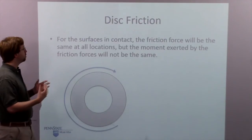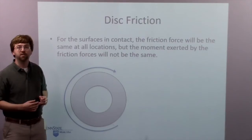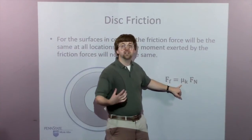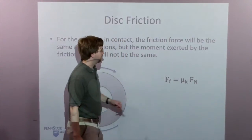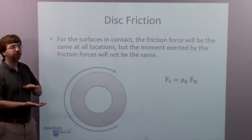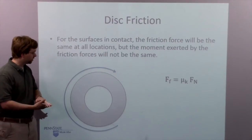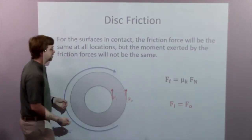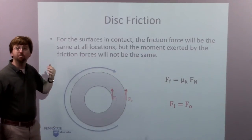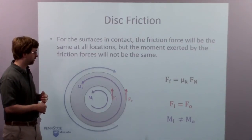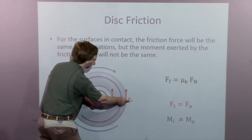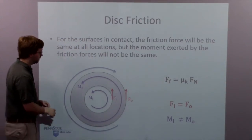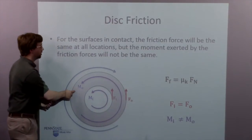For the surfaces in contact, the friction force will be the same at all locations, but the moments exerted by these friction forces are not the same. The friction force at any one location is going to be the kinetic coefficient of friction — assuming uniform materials, that's constant throughout — times the normal force. With two flat surfaces and a single normal force, we have uniform pressure, so the friction force on the inner surface equals that on the outer surface. However, the moments exerted are not equal: the inner surface has a smaller moment arm and the outer surface has a larger moment arm, so resistance to spinning is smaller on the inside than on the outside.